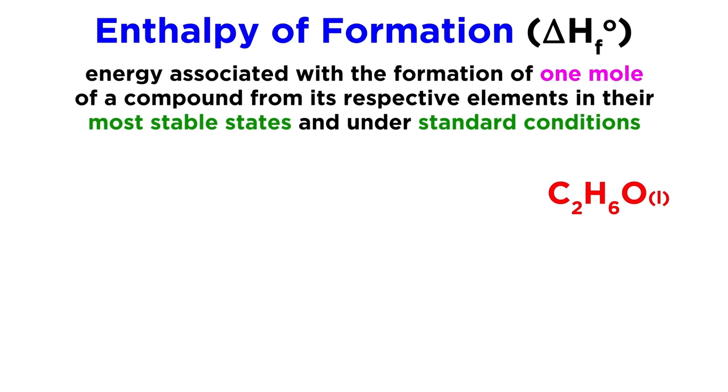If we want to write a heat of formation reaction equation for a compound like ethanol, we just have to break it down into each element, in this case carbon, hydrogen, and oxygen, and use the correct coefficients to result in one mole of the compound. For ethanol, that would be two moles of carbon graphite to give the two carbon atoms, three moles of hydrogen to give the six hydrogen atoms, and a half a mole of oxygen to give the one oxygen atom.